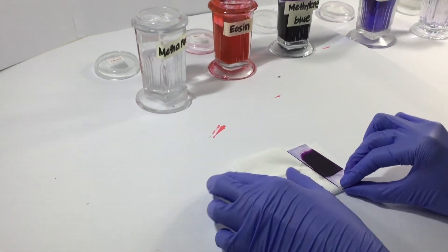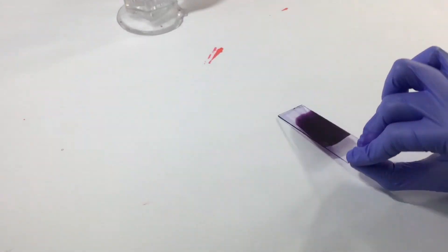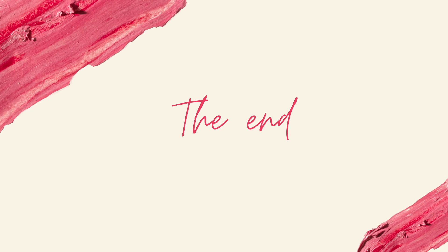Once that's done, you may wipe the back of the slide to remove stain residue and let it dry. That's it! That's how to stain peripheral blood smears. Thank you for watching!